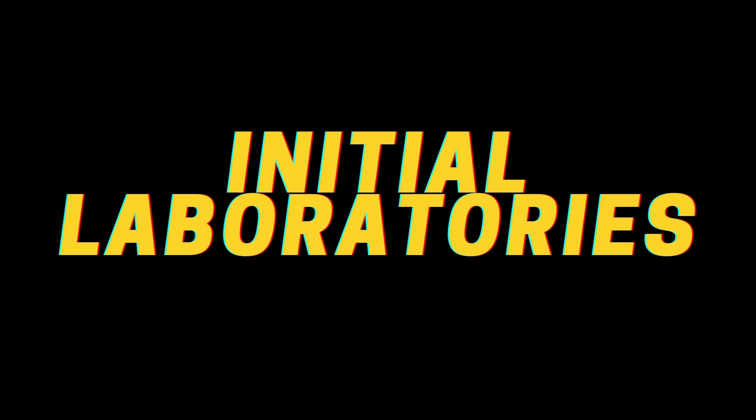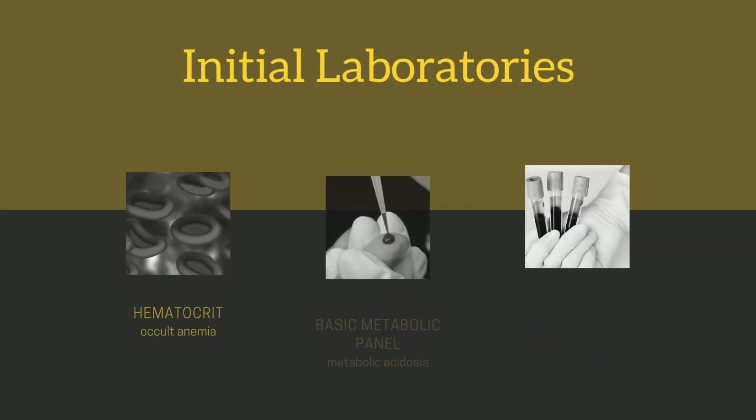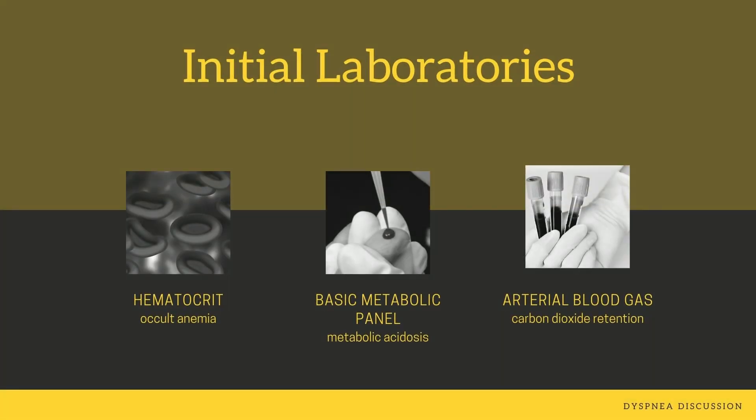Laboratories. Initial laboratory testing should include a hematocrit to exclude occult anemia as an underlying cause of reduced oxygen carrying capacity contributing to dyspnea. A basic metabolic panel may be helpful to exclude a significant underlying metabolic acidosis, and conversely, an elevated bicarbonate might point towards the possibility of carbon dioxide retention that might be seen in chronic respiratory failure. In such a setting, an arterial blood gas may provide useful additional information.